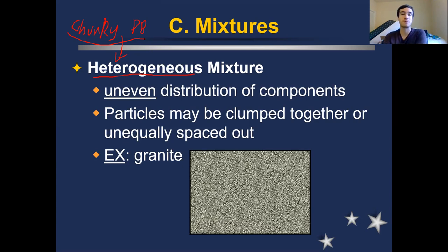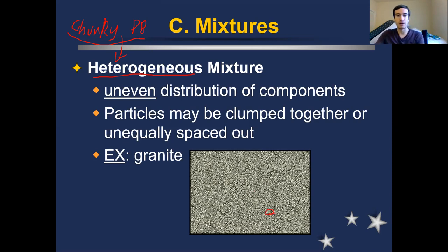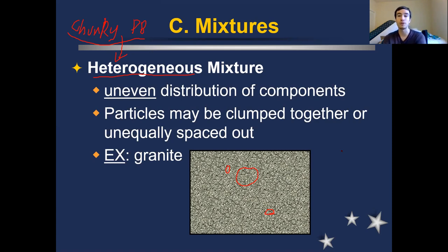Granite — like those popular granite countertops — is a heterogeneous mixture. You can see there are all these different little black, white, and gray dots that are not completely evenly mixed. Some areas have a bunch of black dots, other areas are mostly white and gray with not many black dots, and elsewhere they're all mixed together. We have this very uneven and unequal distribution of minerals that make up granite — not totally even and equal — which gives us our heterogeneous mixture.